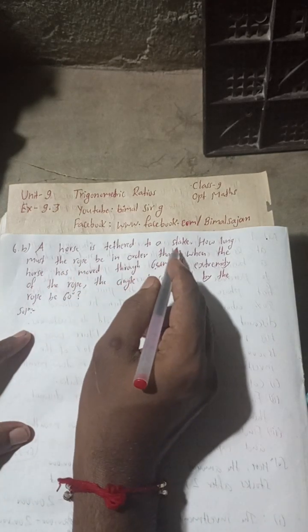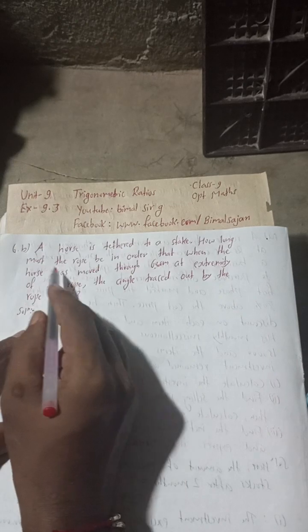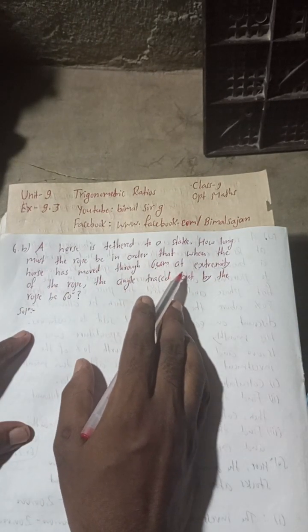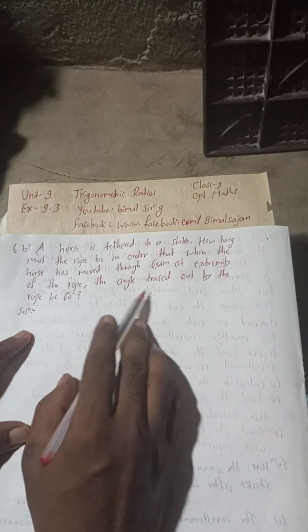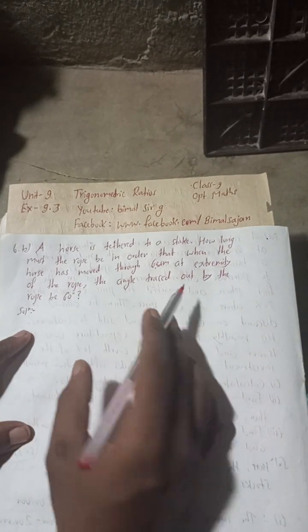A horse is tethered to a stake. How long must the rope be in order that when the horse has moved through 60 cm at extremity of the rope, the angle traced out by the rope be 60 degree.